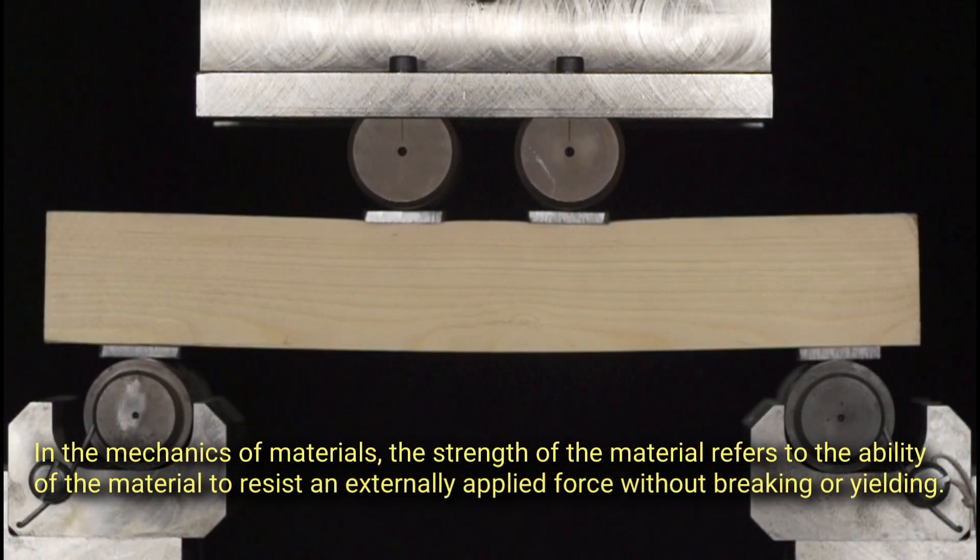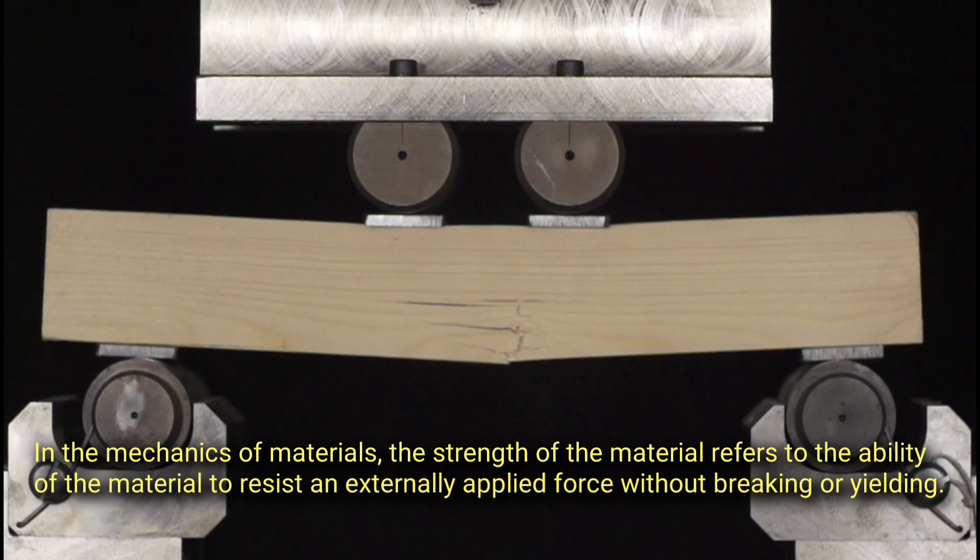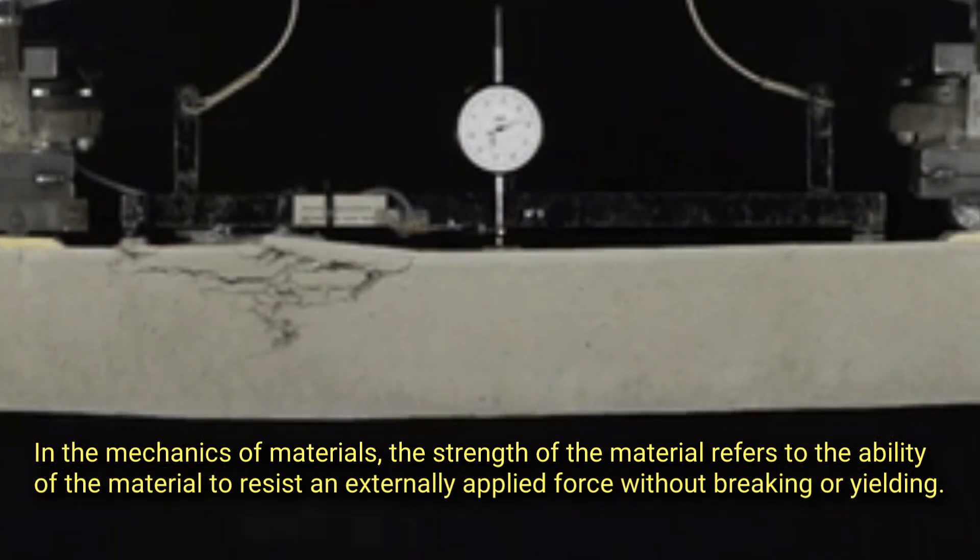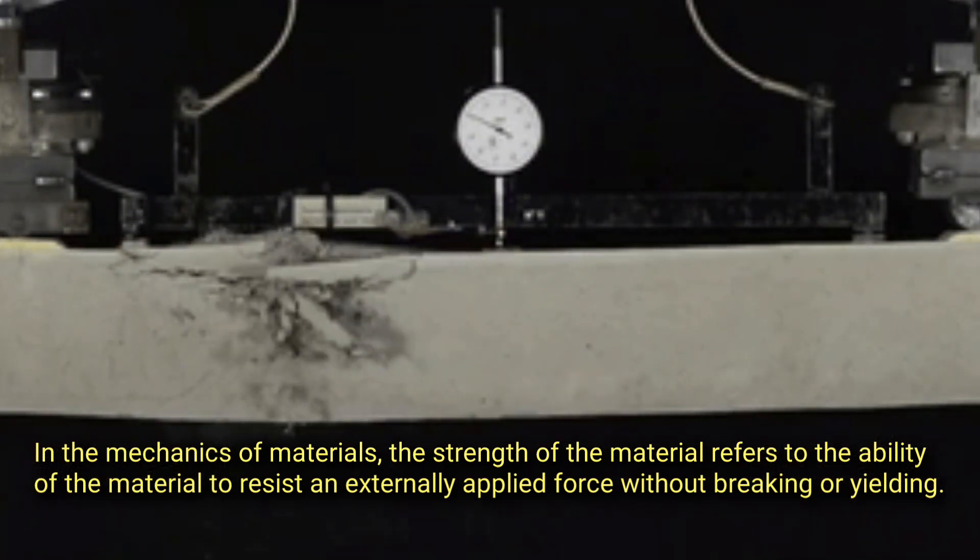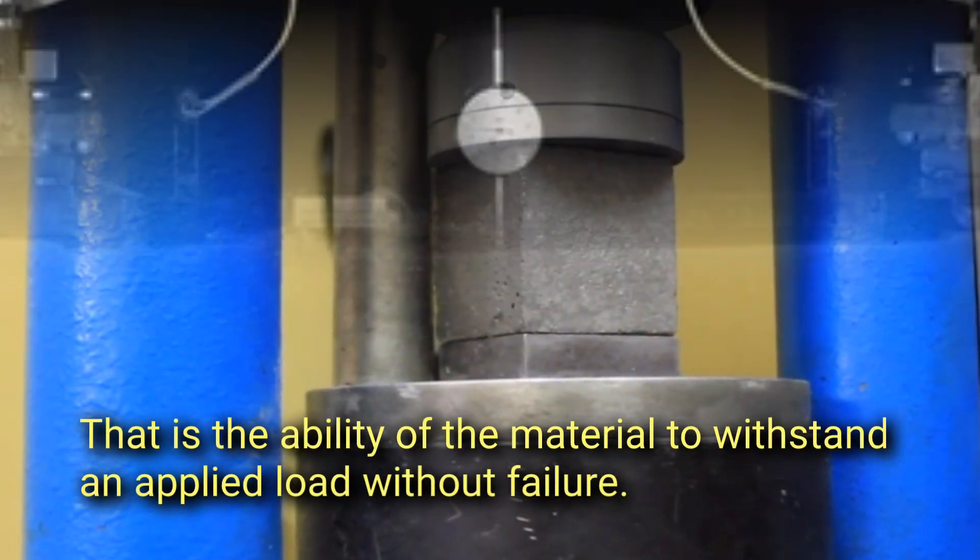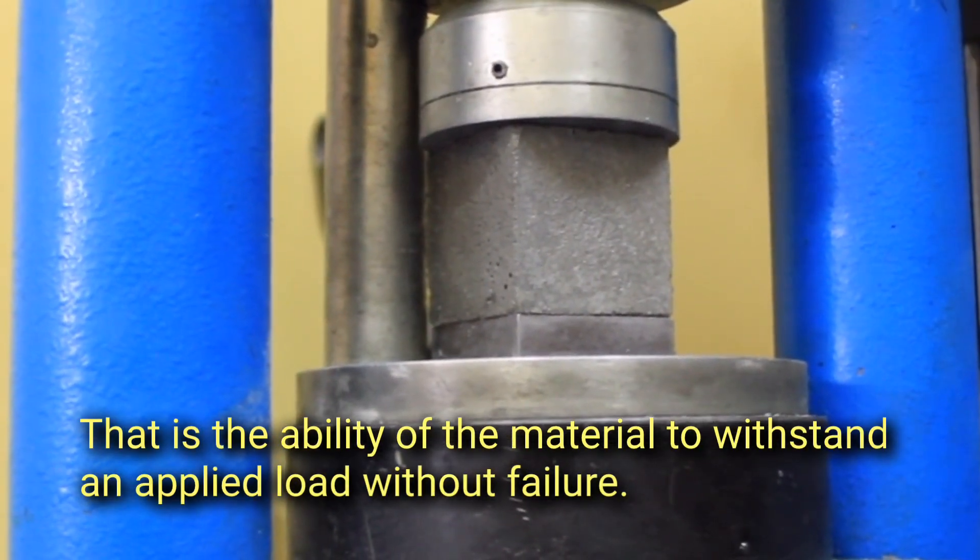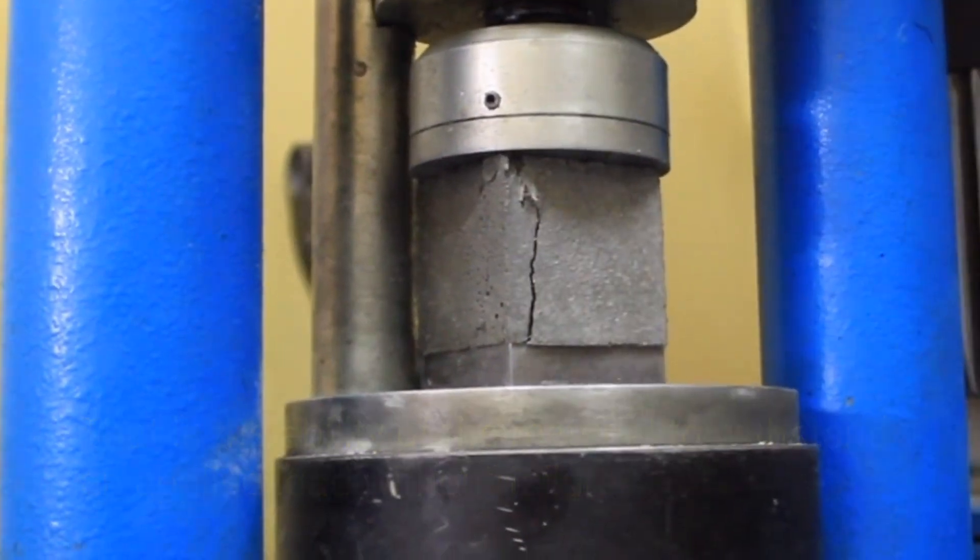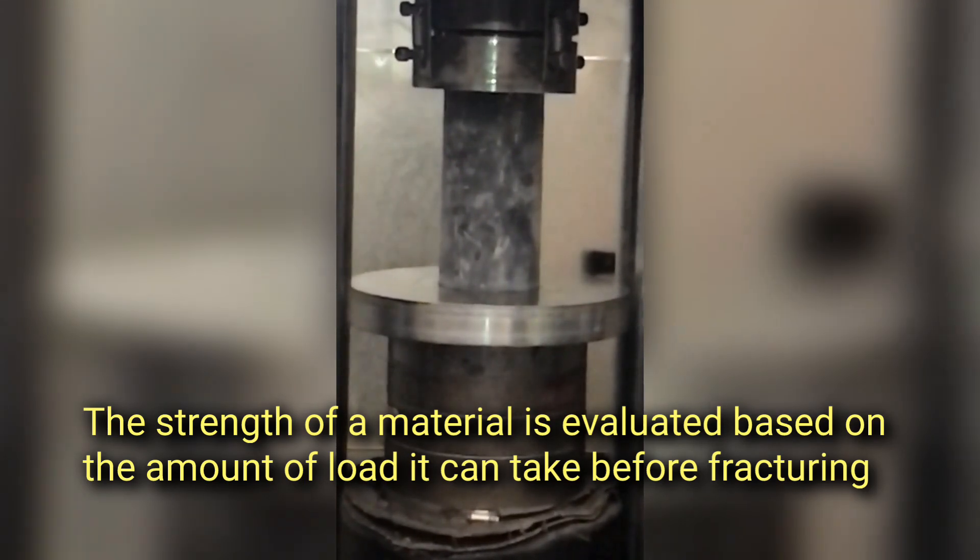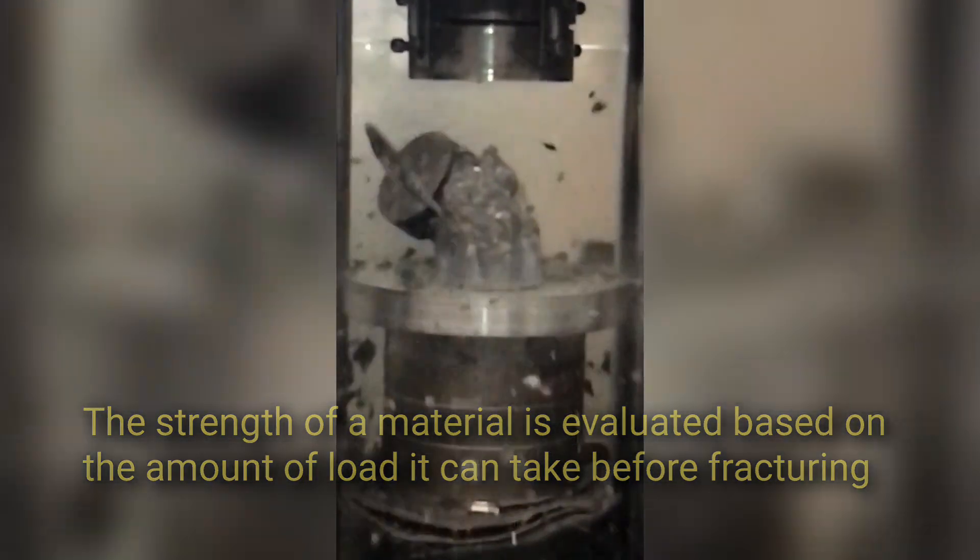In the mechanics of materials, the strength of the material refers to the ability of the material to resist an externally applied force without breaking or yielding. That is, the ability of a material to withstand an applied load without failure. The strength of a material is evaluated based on the amount of load it can take before fracturing.